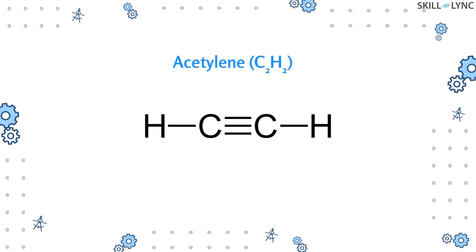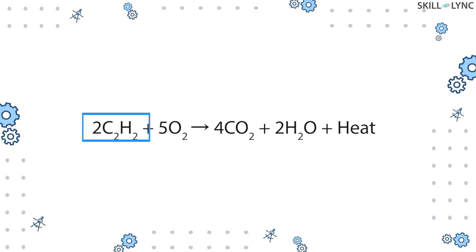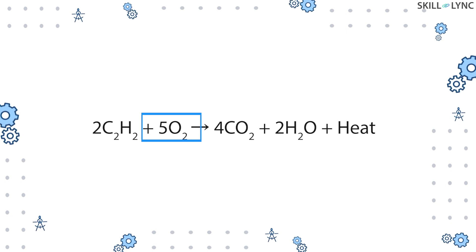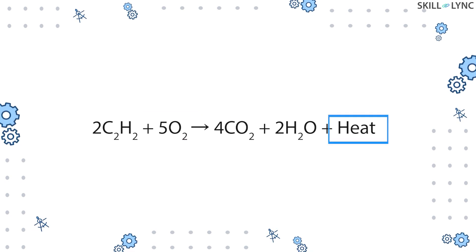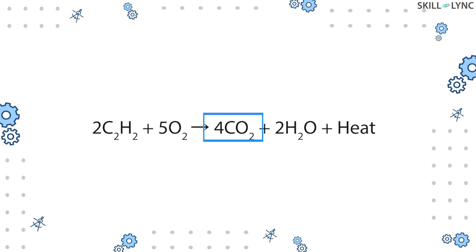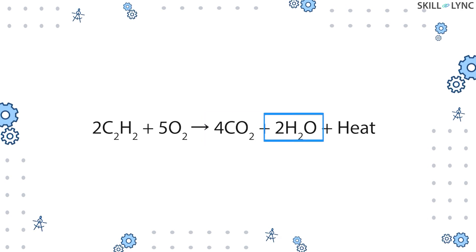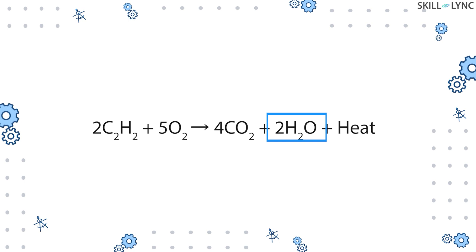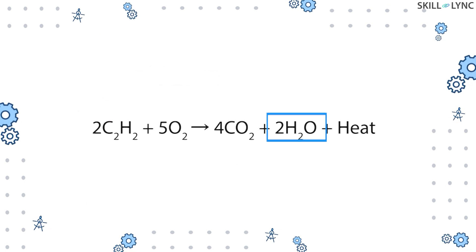The main reason why acetylene burns at such high temperature is due to the triple bond between the two carbon atoms. When acetylene is mixed with oxygen and burnt under a controlled environment, it produces large amounts of heat. This burning also produces carbon dioxide, which helps in preventing oxidation of metals being welded. The byproduct water evaporates into the atmosphere as water vapor due to the high temperature.